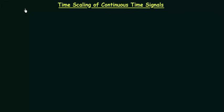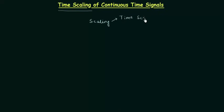In the last two lectures we completed addition and multiplication of continuous time signals. In this lecture I will explain time scaling. Scaling is of two types: the first one is time scaling and the second one is amplitude scaling. In this lecture I will explain time scaling and in the next lecture we will deal with amplitude scaling.